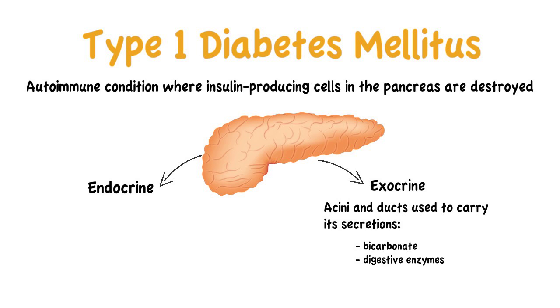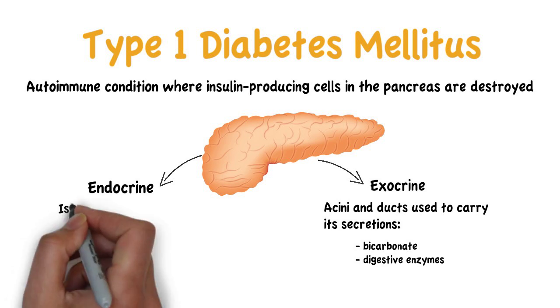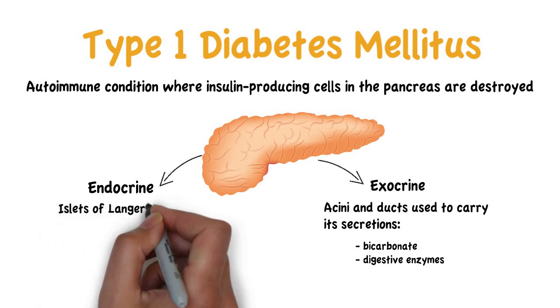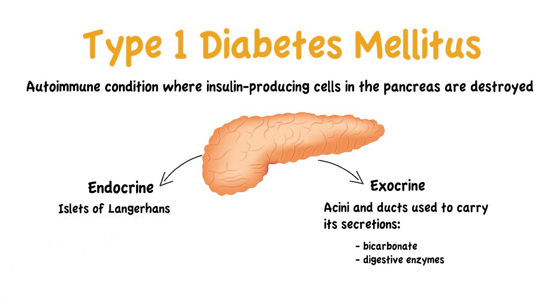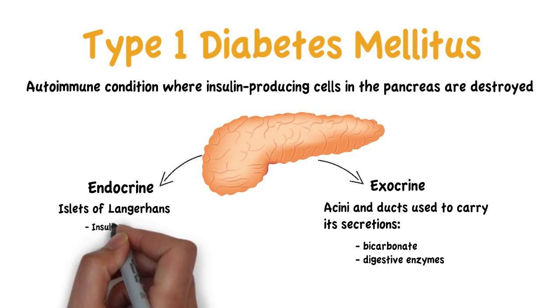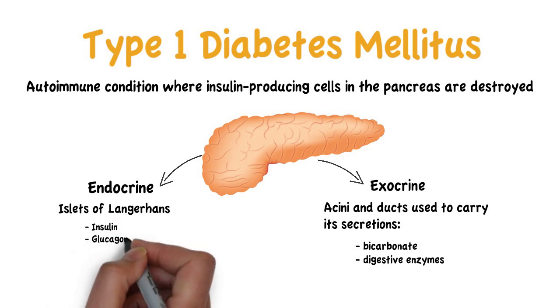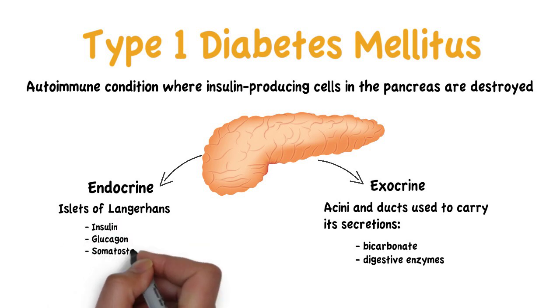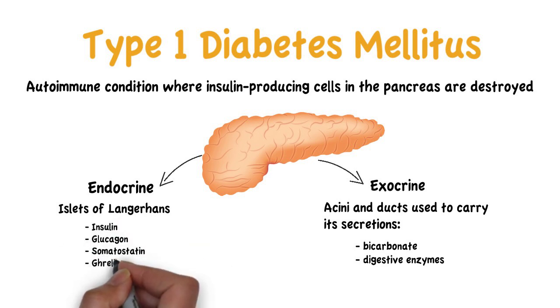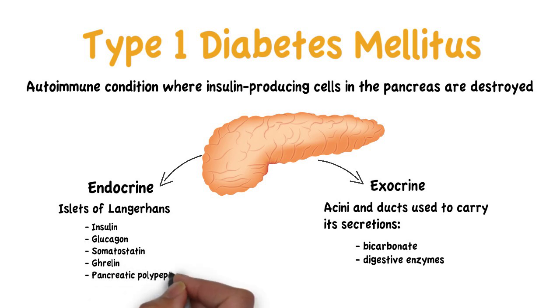The endocrine pancreas is organized as islets of Langerhans and contains cells that secrete insulin, glucagon, somatostatin, ghrelin, and pancreatic polypeptide.